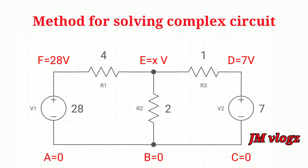And the current passing through R3 is X minus 7 divided by the value of R3, which is 1. Then we get the three values of current here.